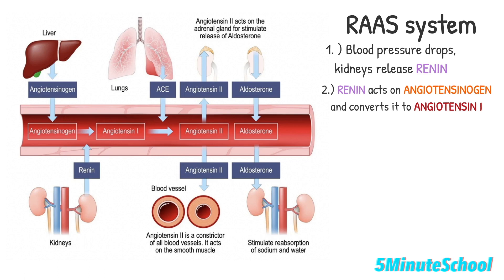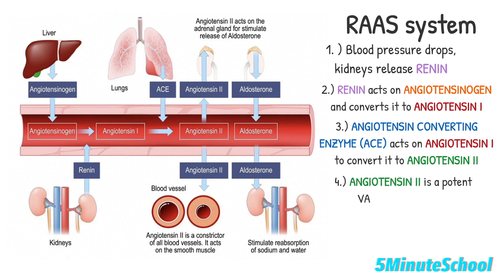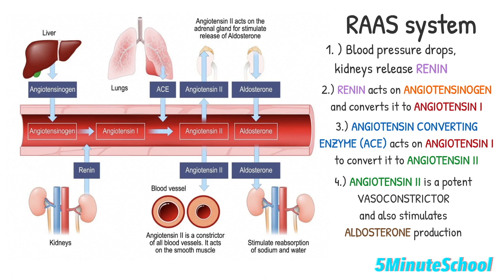Angiotensin converting enzyme then converts angiotensin 1 into angiotensin 2, which is a potent vasoconstrictor — meaning it narrows blood vessels — and it stimulates aldosterone release from the adrenal glands. Aldosterone promotes salt and water retention, which further contributes to increased blood pressure.